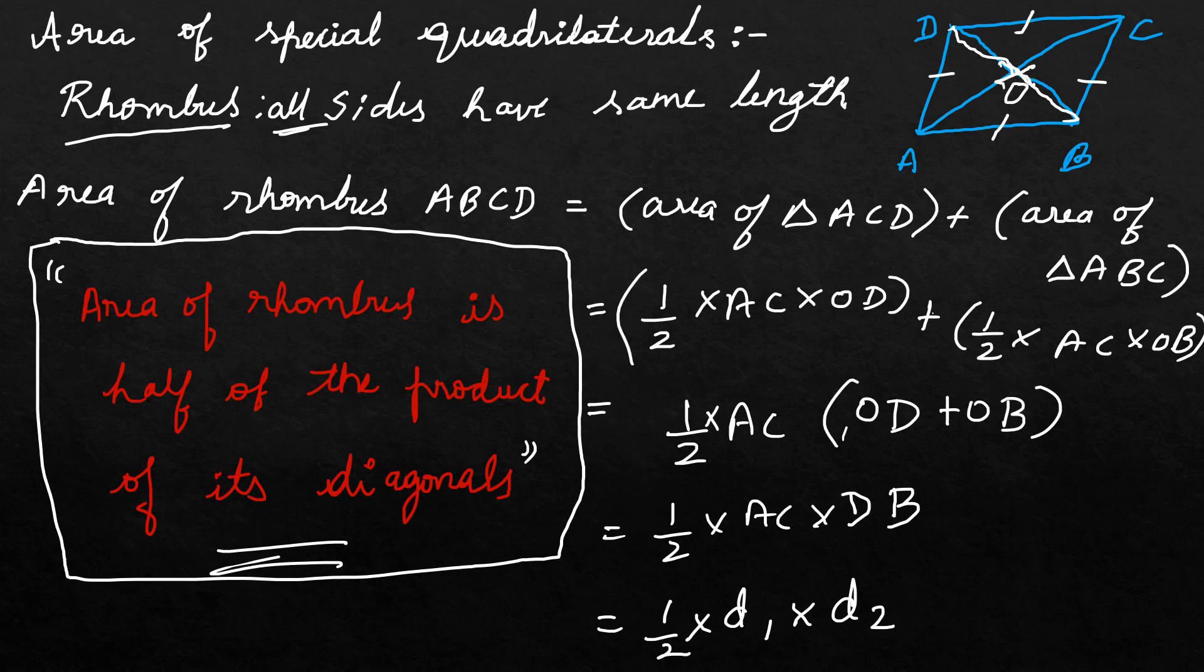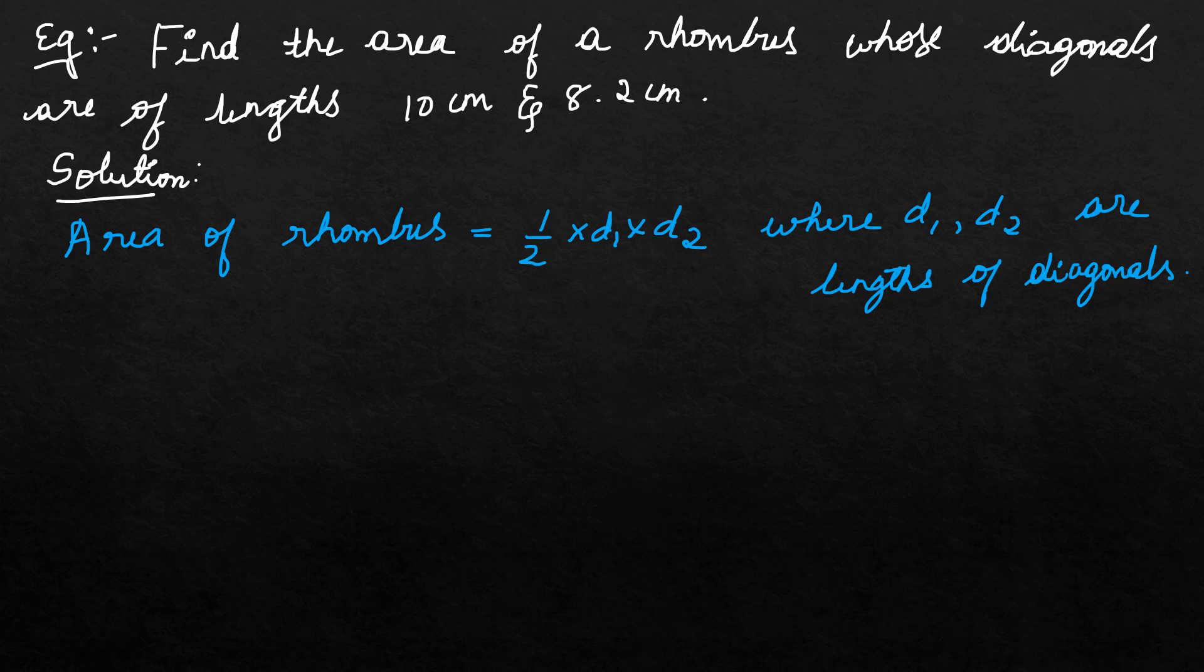Let's look onto the example. Find the area of a rhombus whose diagonals are of length 10 cm and 8.2 cm. What is given here? Given is d1, that is diagonal one, first diagonal 10 cm, and diagonal two 8.2 cm.